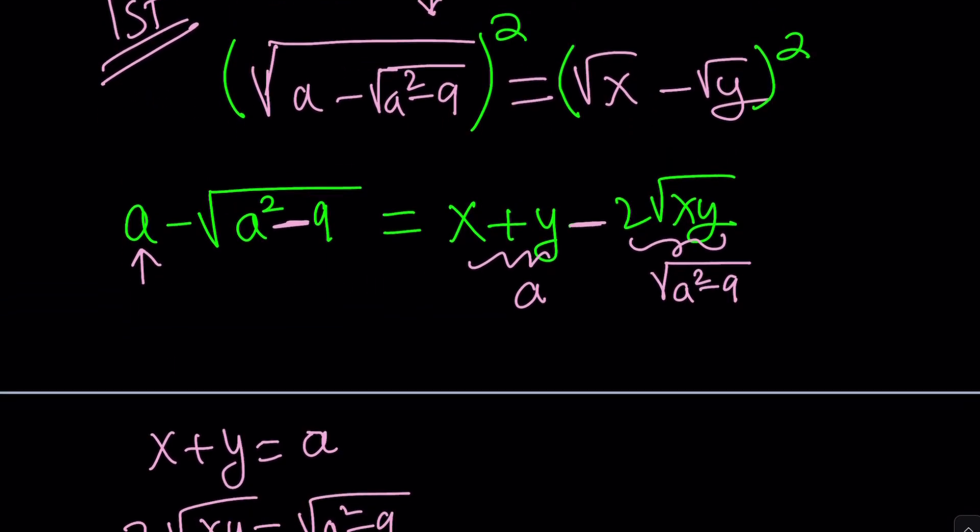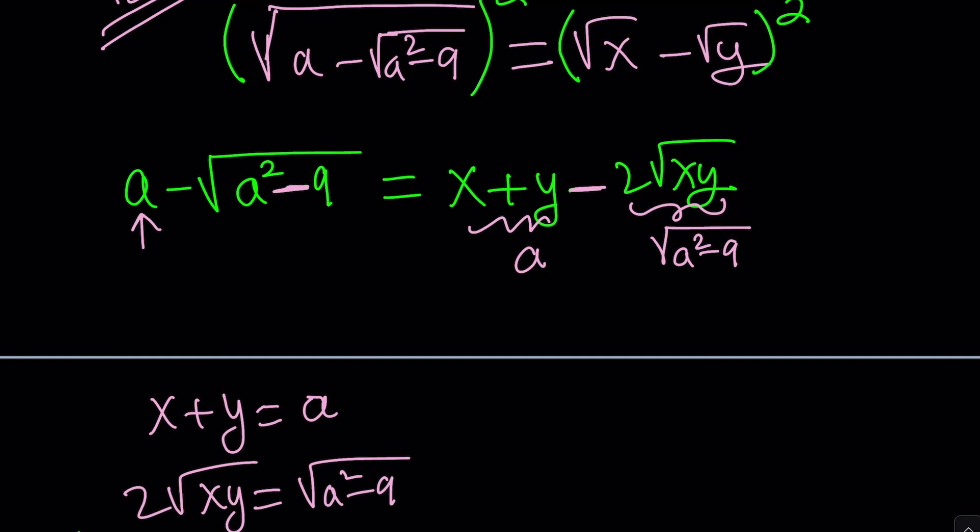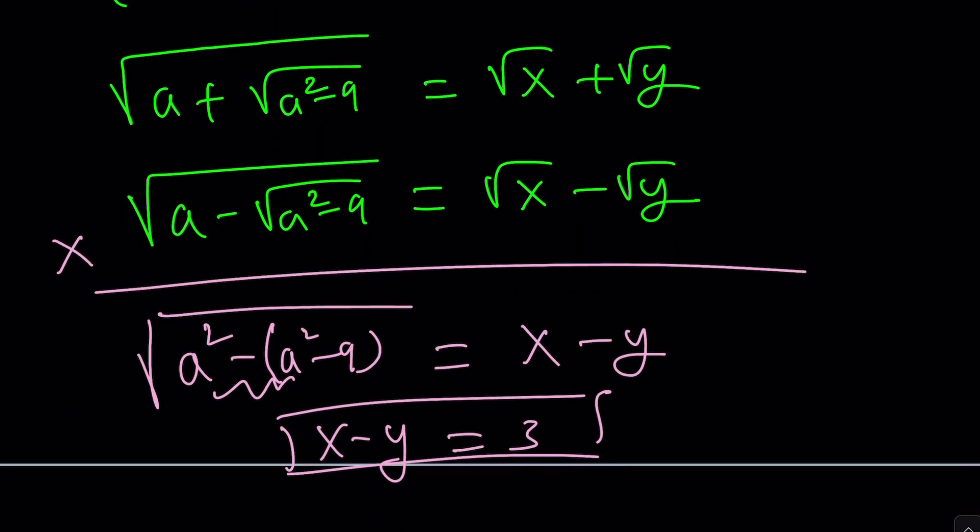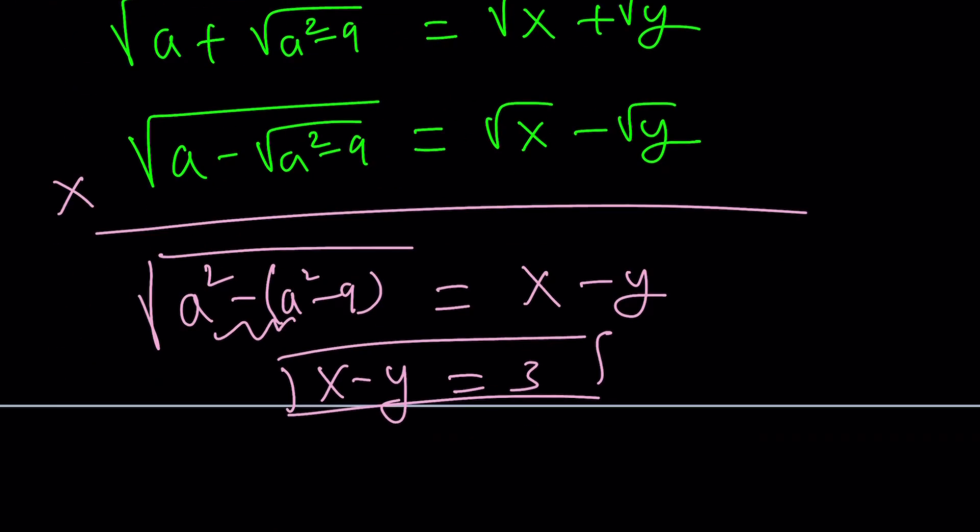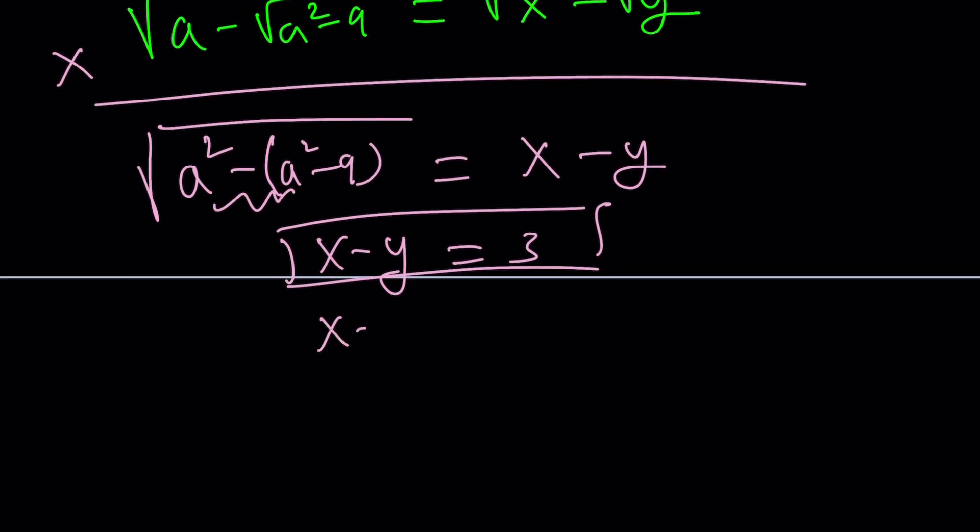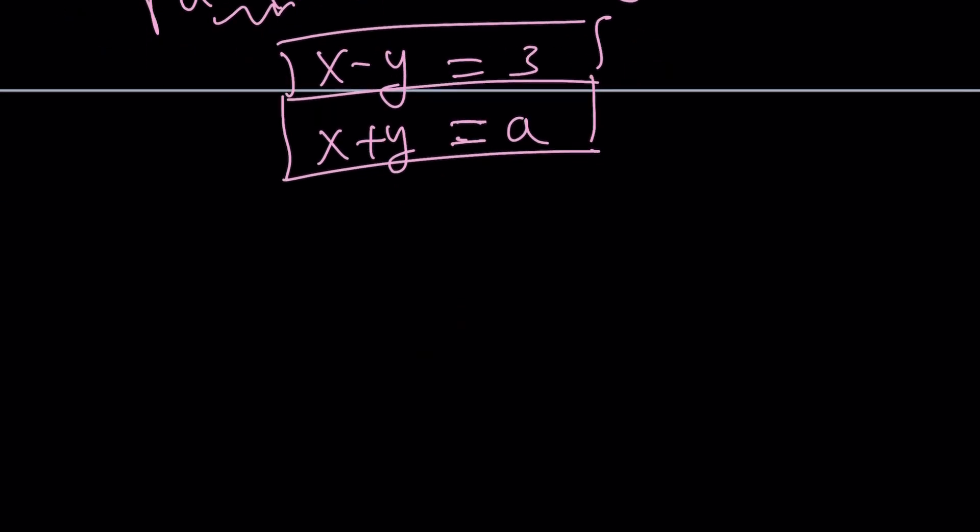But remember, our goal was to solve for x and y. And we only got x minus y equals three. So what about x and y specific individual values? Well, I have x plus y equals a. And now I can go ahead and use this system. Remember, our answer is going to be in terms of a. So we're not expecting to get something numerical totally, but something in terms of a rather. So if you solve this system, add them up and divide by two, x from here is going to be a plus three over two.